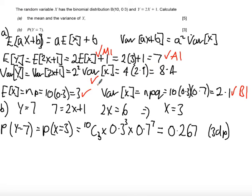You then get a method mark if you've got the variance of Y is 2 squared times the variance of X, and an answer mark if you've got the correct answer of 8.4.